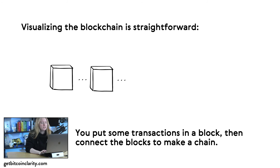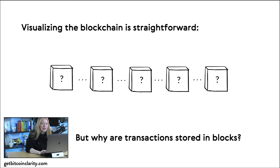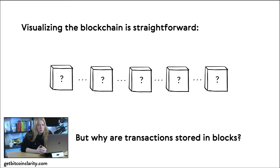Visualizing the blockchain is straightforward — you put some transactions in a block, then connect the blocks to make a chain. But why are transactions stored in blocks? Couldn't you just have a ledger of transactions listed one by one? Why do they have to be grouped together in blocks? That's the question we're asking.